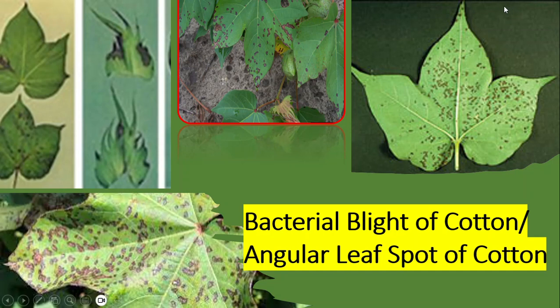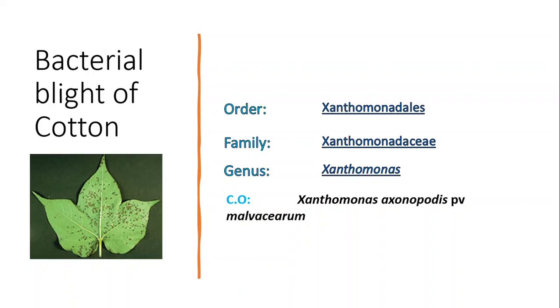Assalamu Alaikum students. Today we will talk about bacterial blight of cotton, also known as angular leaf spot of cotton. This is a bacterial disease caused by Xanthomonas axonopodis pathovar malvacearum. The causal organism belongs to the order Xanthomonadales and family Xanthomonadaceae.